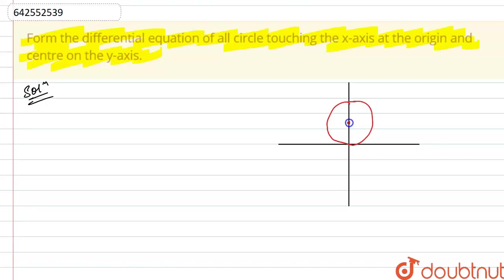This is its center. Center will lie at 0, a and this is its radius. Let's see, this is a. Now we can write the equation of such family of circles.